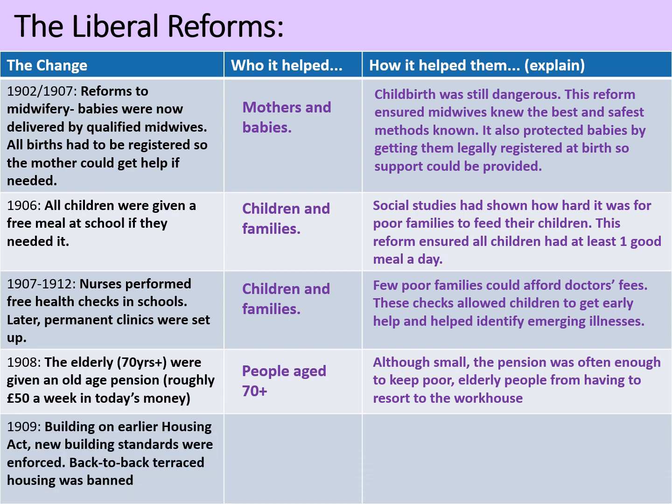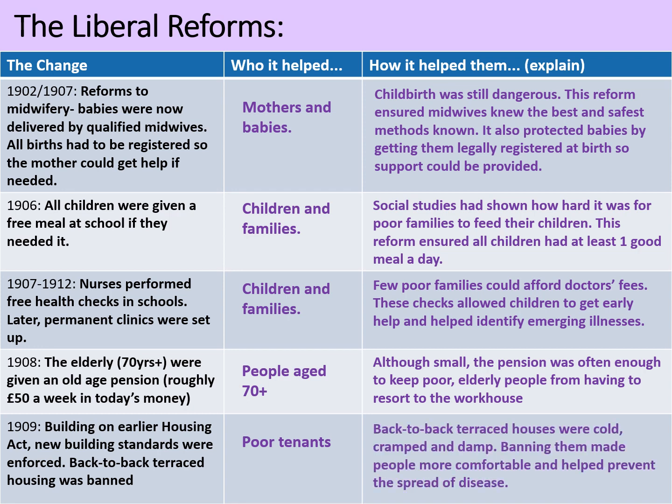And lastly, 1909: building on the earlier Housing Acts, new building standards were enforced. Back-to-back terrace housing was banned, but that didn't mean that the stuff already standing was immediately demolished. However, this did help some poor tenants. Back-to-back terrace houses were cold, cramped, and damp. Banning them made people more comfortable and helped prevent the spread of disease.